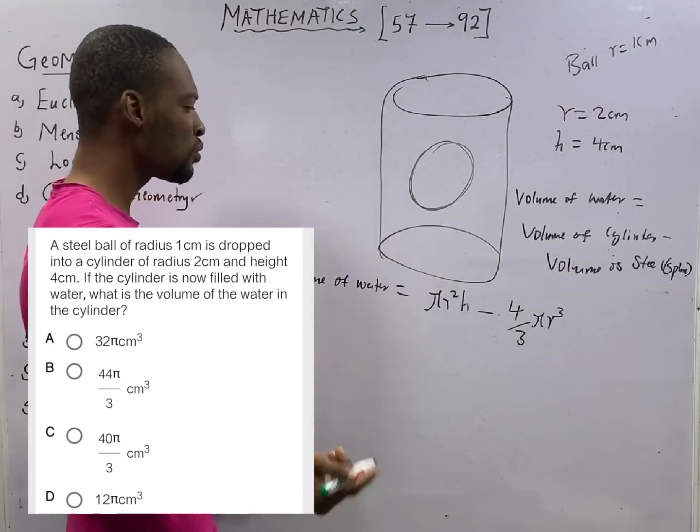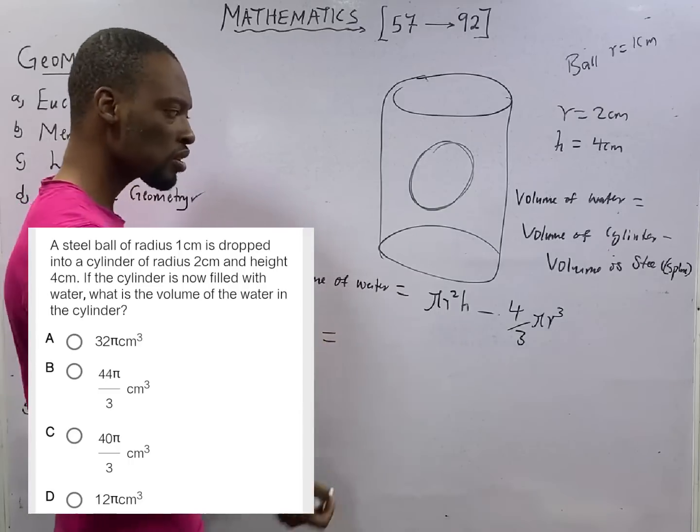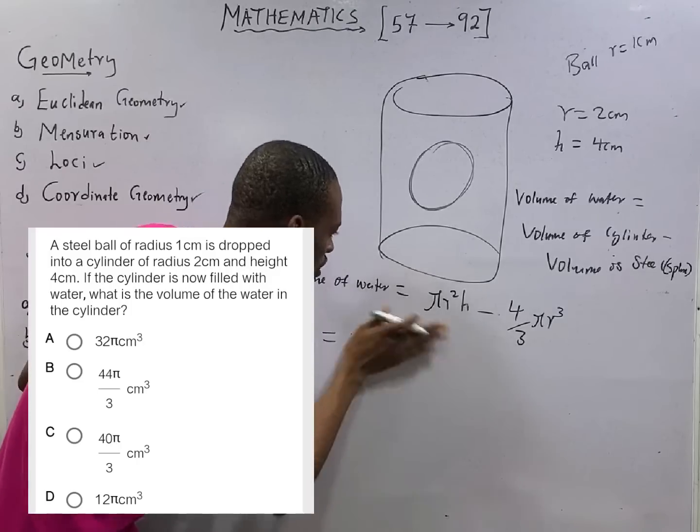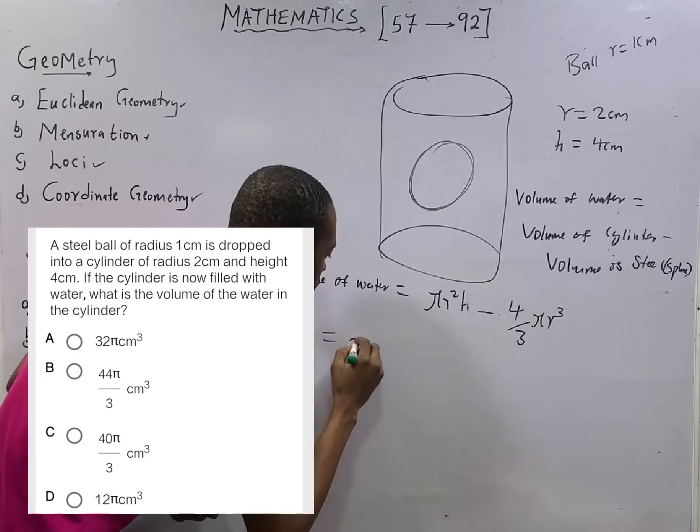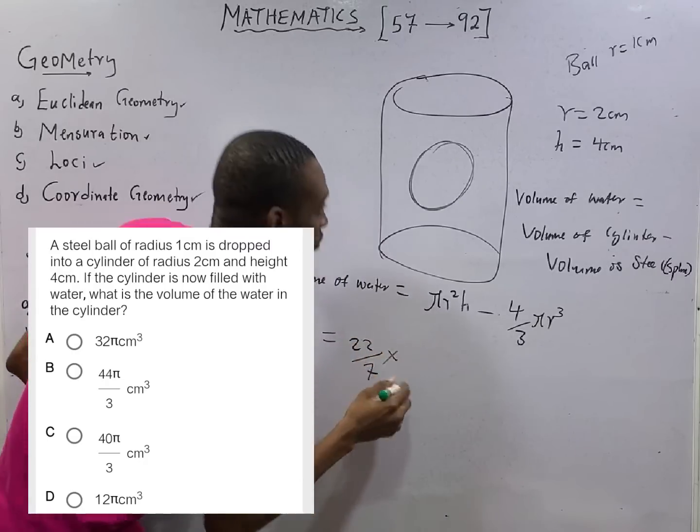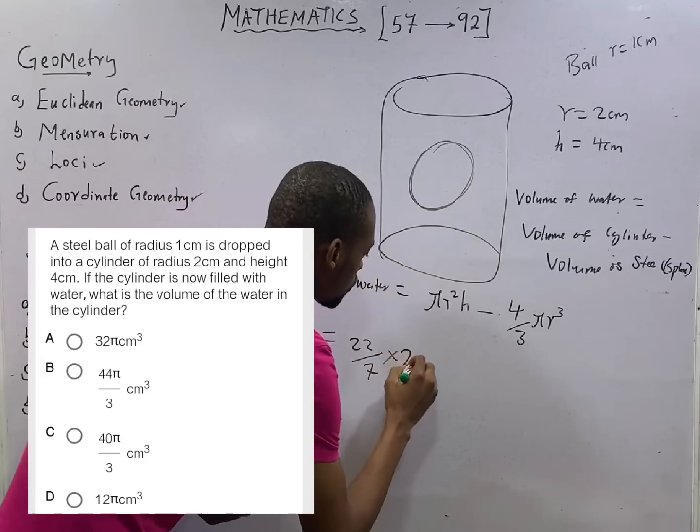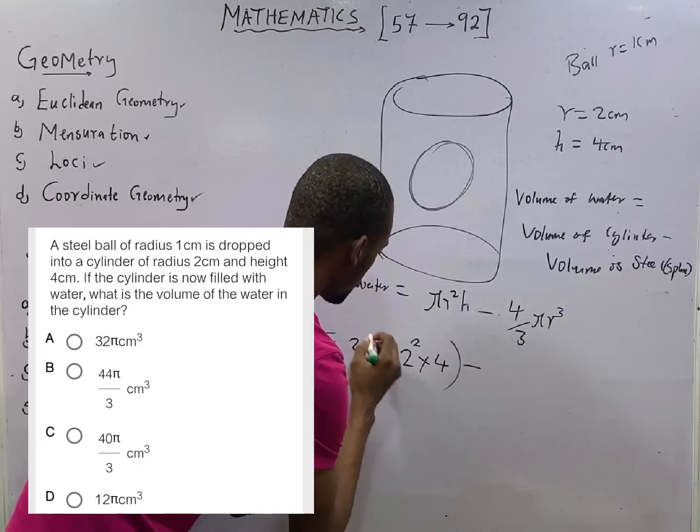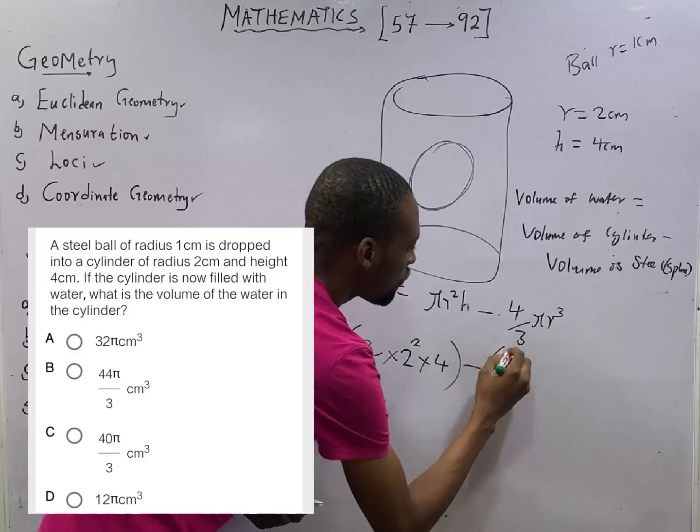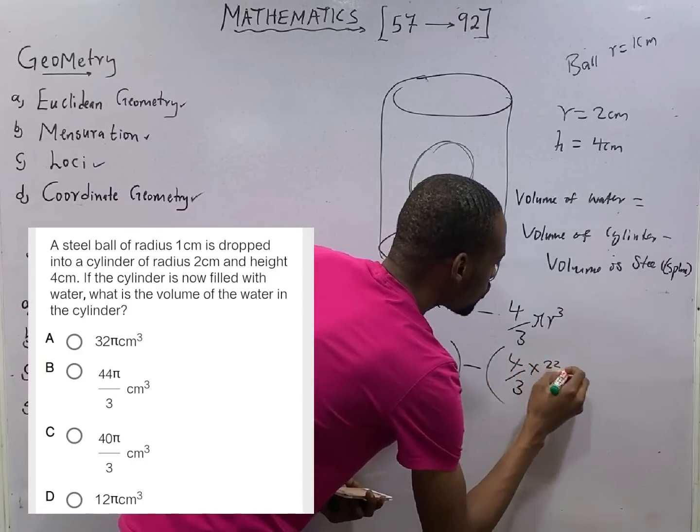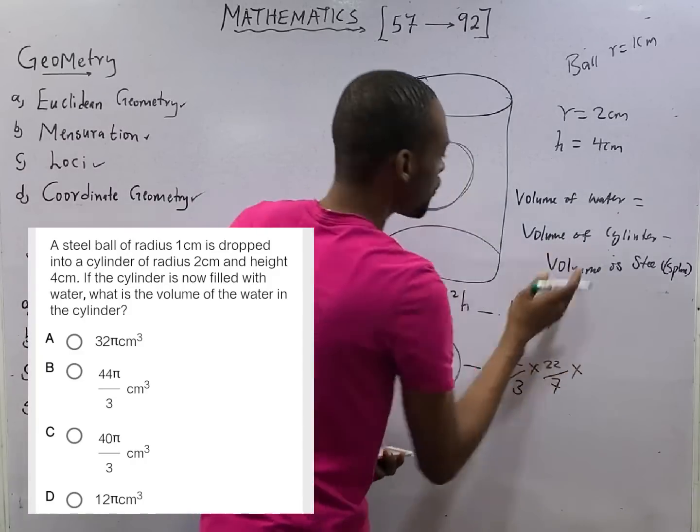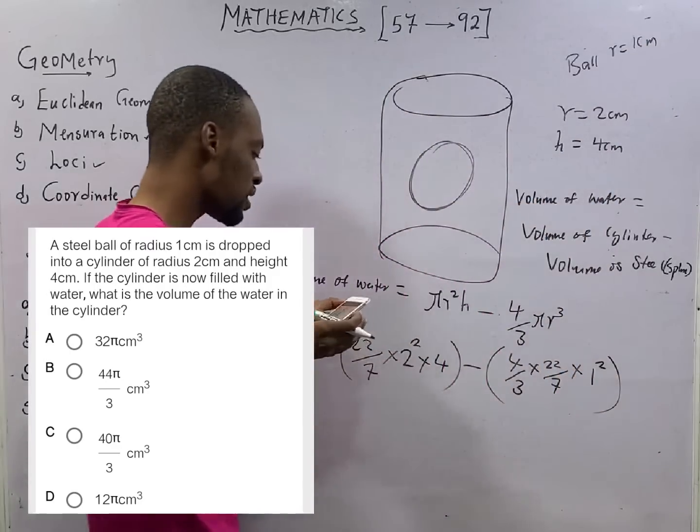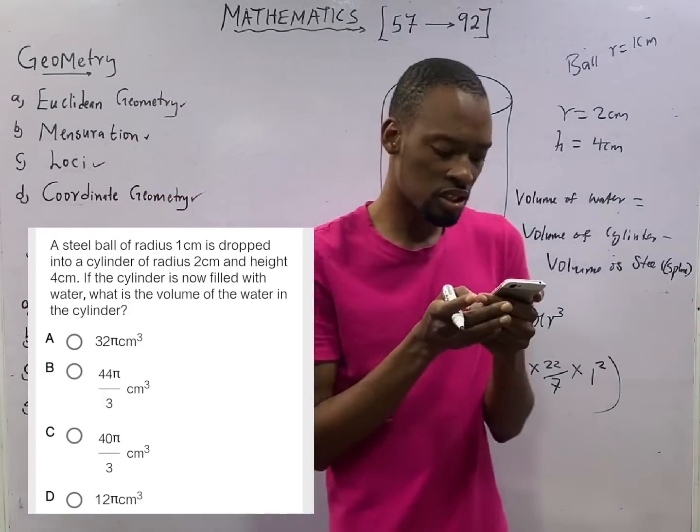Now we have everything we need to solve this question. This is πr²h. Pi, 22/7 times, for the cylinder radius is 2, 2 squared times height, minus 4/3 times 22/7 times for the ball radius is 1 cm, 1 cubed. That is basically the answer and basically the solution.